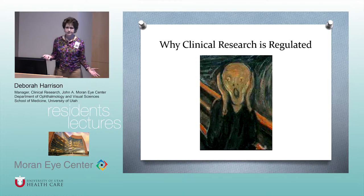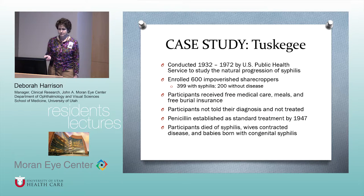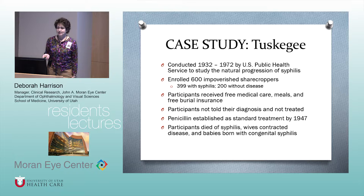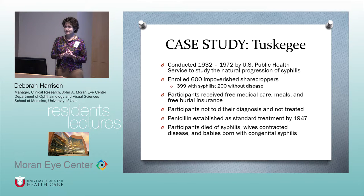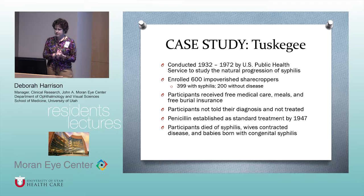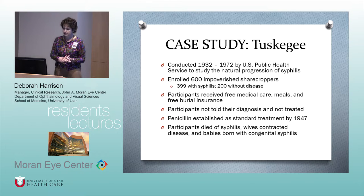Why is clinical research regulated? Because there are people who abuse privileges. The most famous example is the Tuskegee Syphilis Study — appalling every time you read the statistics. It took place over 40 years in the United States, not in the Middle Ages — from 1932 to 1972. The U.S. Public Health Service enrolled 600 impoverished sharecroppers, most of them African American, comparing folks who developed syphilis versus those who did not. Their incentive for participation was free medical care, meals, and burial insurance.